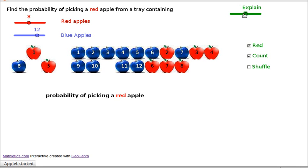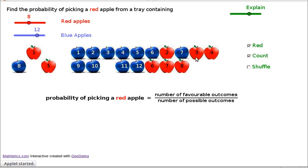And so what you do is you say the probability of picking a red apple is the number of favourable outcomes divided by the number of possible outcomes. So the favourable outcomes, we've decided in this experiment that the favourable outcome is picking a red apple and the possible outcomes would be picking any apple.